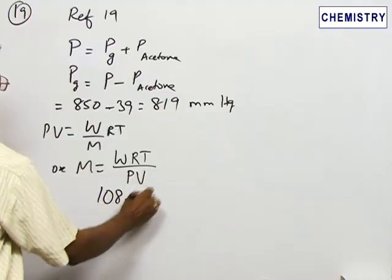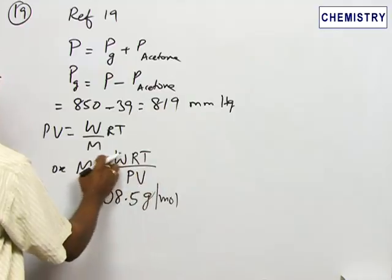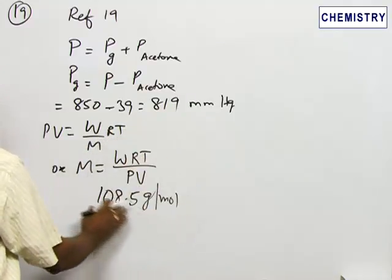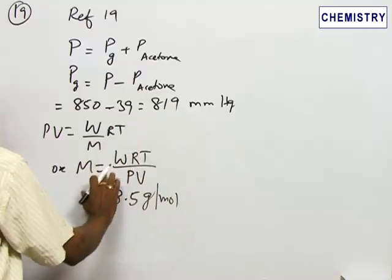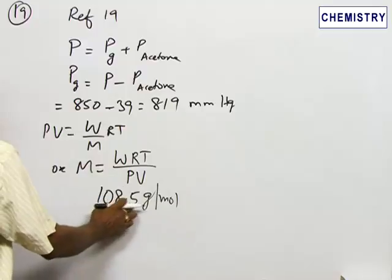108.5 gram per mole. Here the R value, T value, pressure, volume, and W, these values you have to substitute because the data is available from the problem. On substitution and subsequent solvation, we get the answer 108.5 gram per mole.